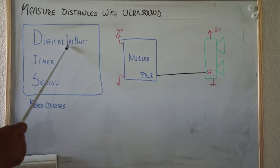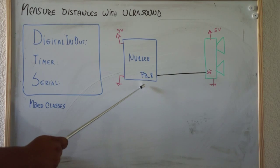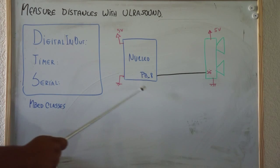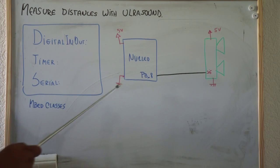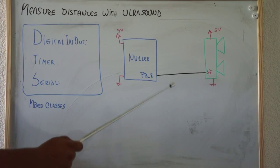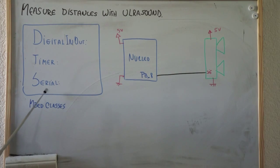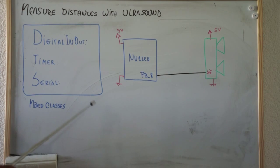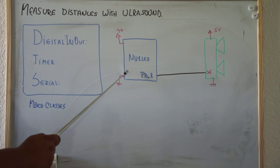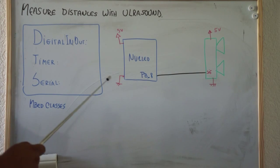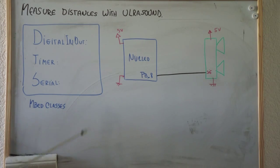The DigitalInOut class is going to control this pin, because part of the time we're going to be outputting and the other part we're going to be reading input. The Timer class will be used to measure the width of the response pulse from the ultrasonic sensor. The Serial class handles UART communication between the computer and the Nucleo board through the USB serial connection.